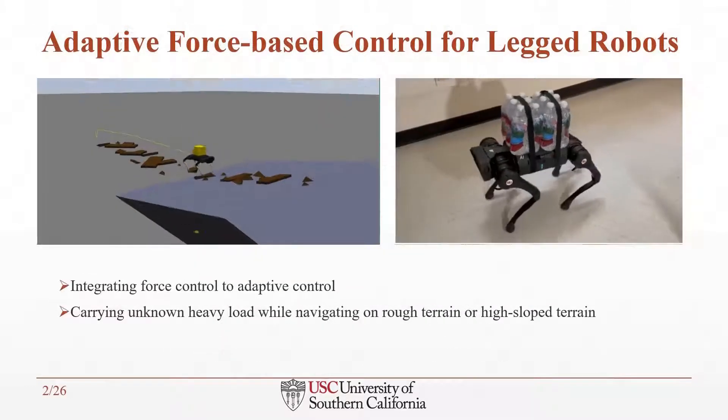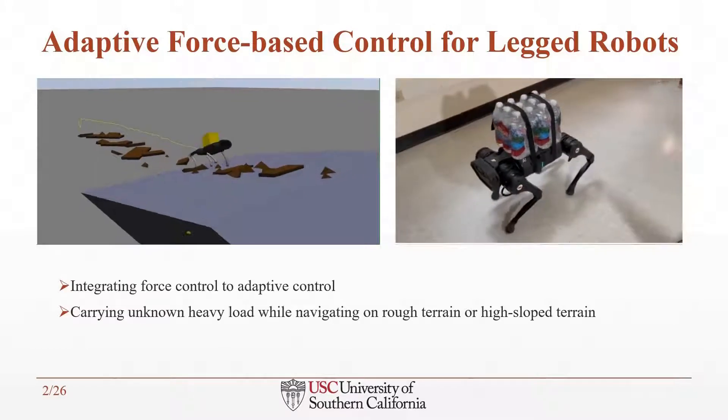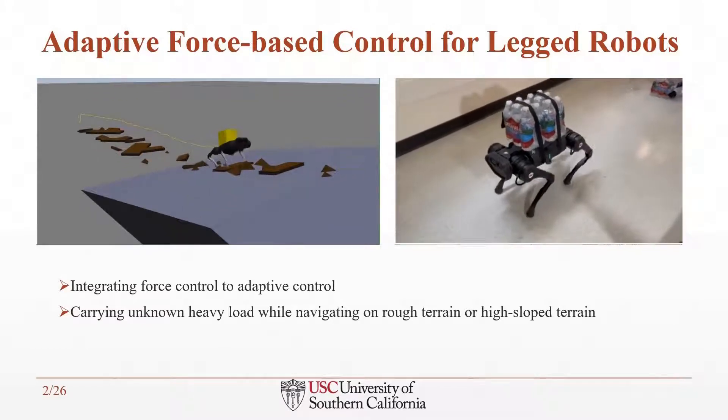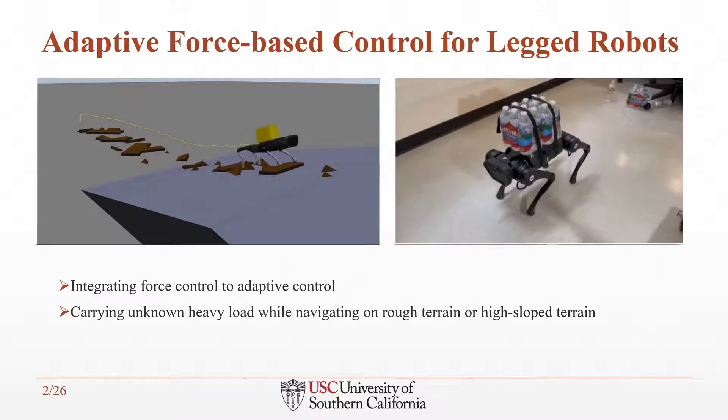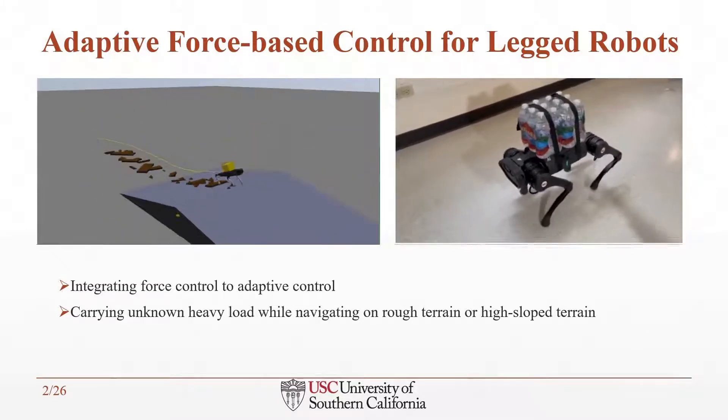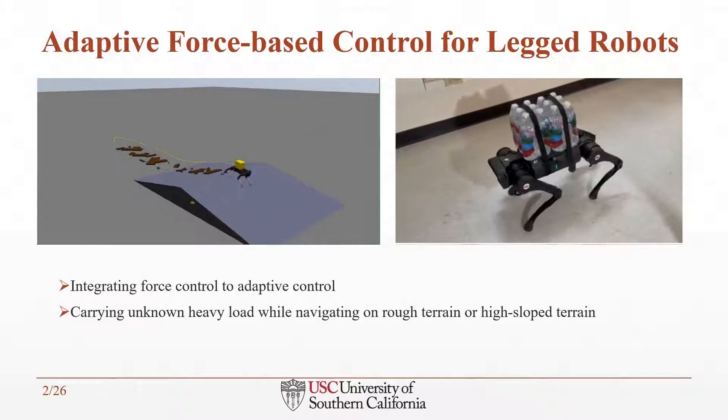In this work, we present a novel control structure that combines force-based control into adaptive control, and we aim to compensate for uncertainties of the robot's model. One application for our control approach would be carrying an unknown heavy load using a leg robot while walking on rough terrain or high-slope terrain.